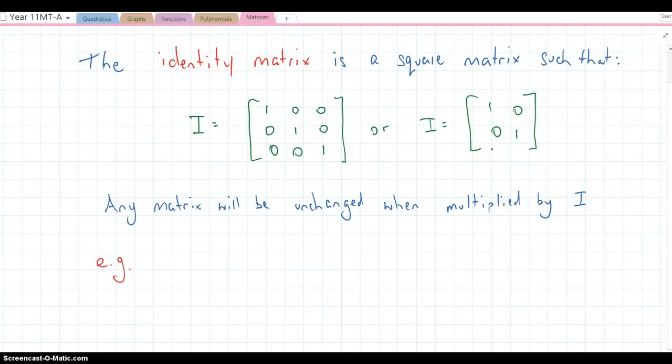Identity matrix it's called. It has the property that when multiplied by another matrix, it's like multiplying by 1. It's the 1 of the matrix world.